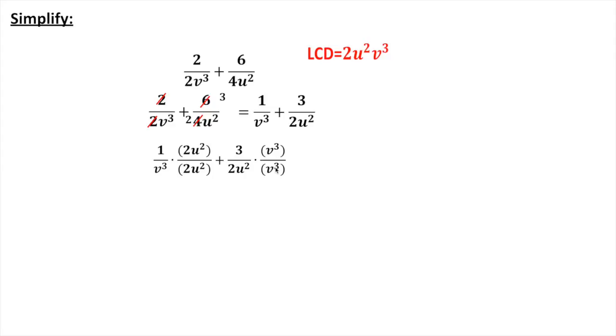All right, now as I multiply top and bottom by that, I end up with this common denominator here, which is 2u squared v cubed. 1 times 2u squared is just 2u squared. 3 times v cubed is 3v cubed.